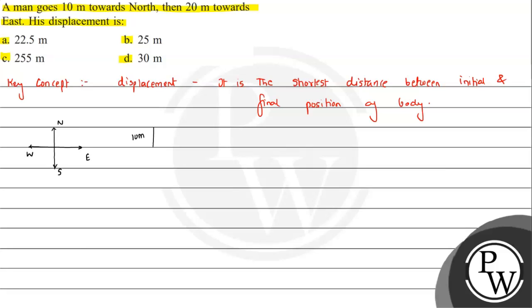Now here we have said that a man goes 10 meter towards north, then 20 meter towards east. This is the final point. So the shortest distance between initial and final point is this. Basically we are interested in calculating this value.